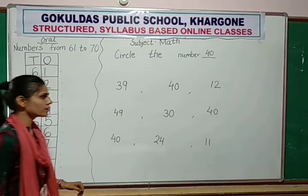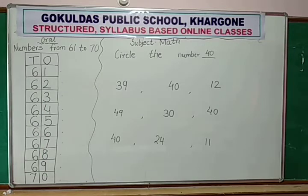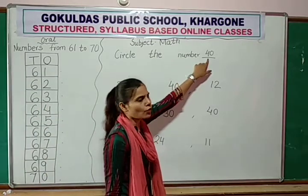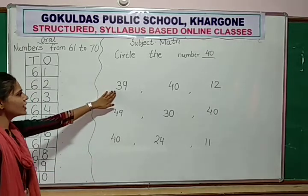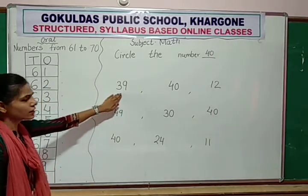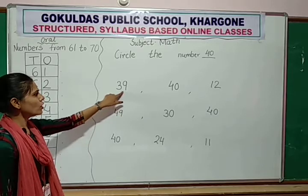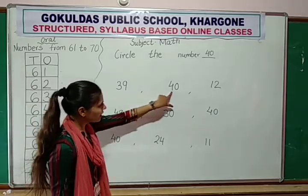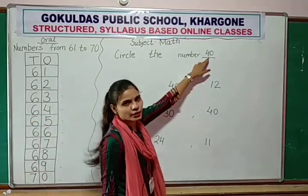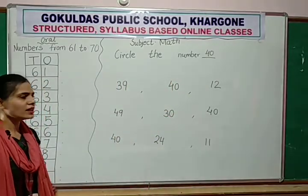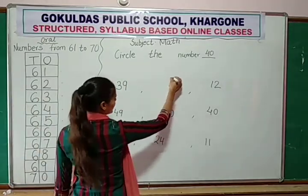So there are so many numbers. First you read all the numbers, identify the number, and then find out number 40. Then circle the number 40. First, which number is this? The number is 39. So don't circle. Now next is 40. Here, this number is 40. There are also 40. First you identify the number 40, then circle the number 40.